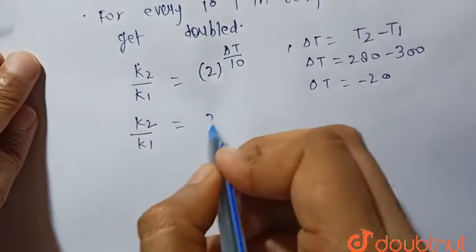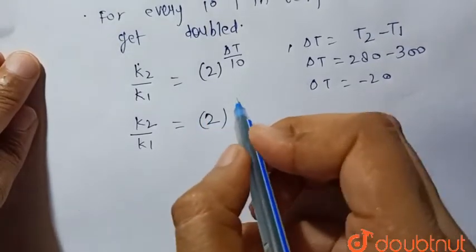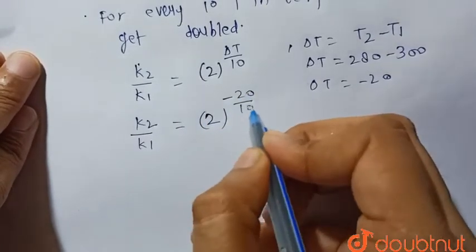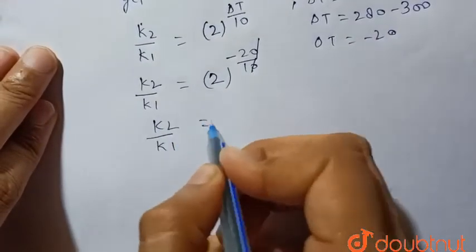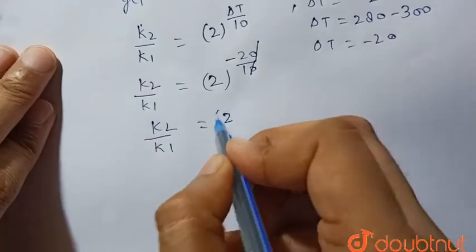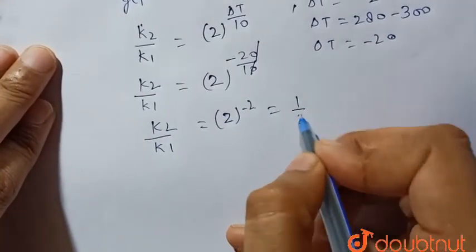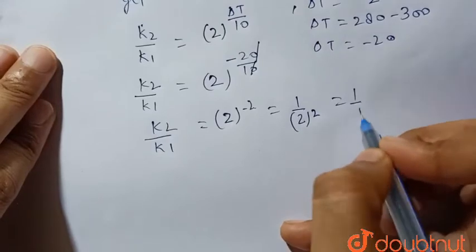k2 by k1 is equal to 2 to the power minus 20 by 10. So k2 by k1 will be equal to 2 to the power minus 2, that is 1 by 4.